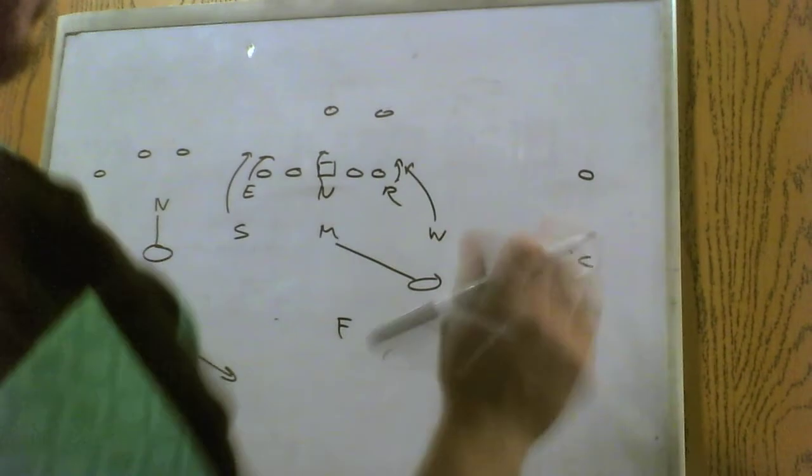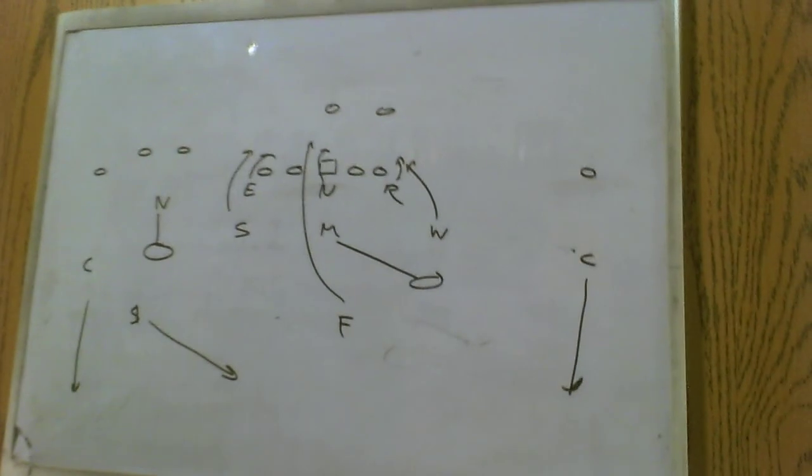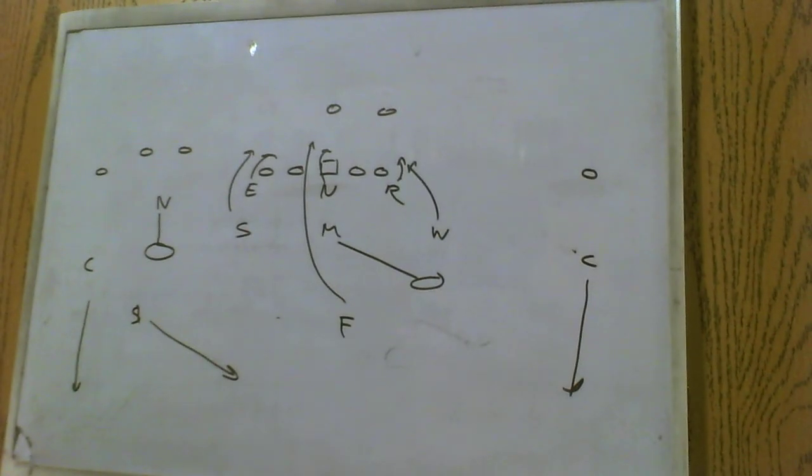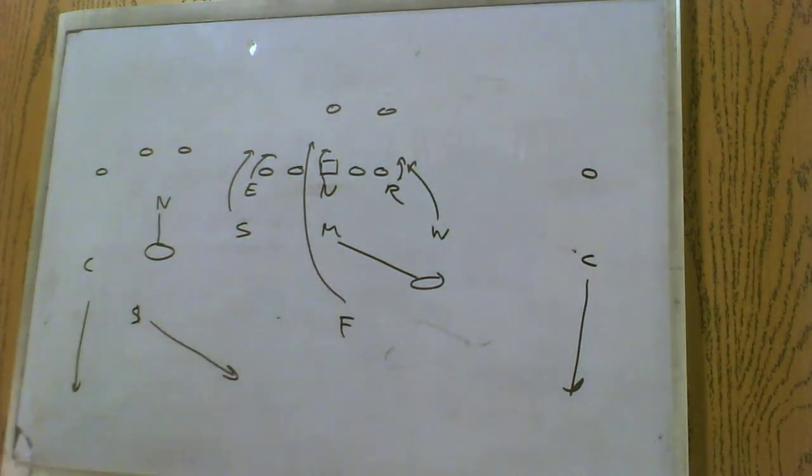You can bring the free safety, bring the free safety. And that's pretty much the entire defense. Again, cover three, basic spot drop, no pattern reading. If there's two underneath defenders, they drop to the hash marks. If there's three underneath defenders, it's numbers, numbers, drop to the middle of field, everyone else blitz.